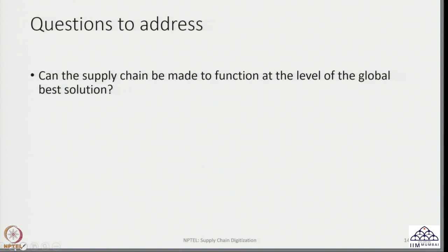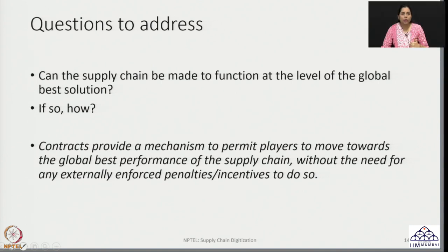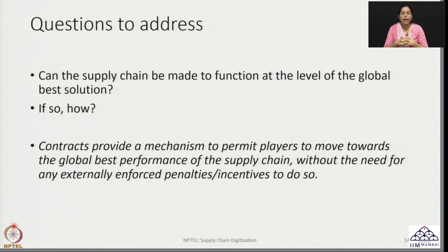Can we make the supply chain function at the level of the global best solution, which is 50,000 units? The way to carry this out is through contracts. Contracts provide the mechanism to allow players to deal with each other and achieve the global best performance of the supply chain, such that all players — in an entire supply chain with multiple players — can collaborate to produce the best performance.